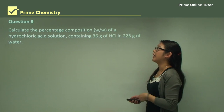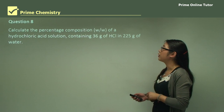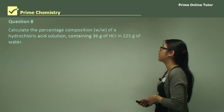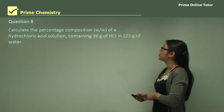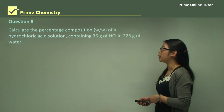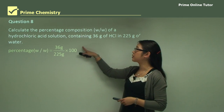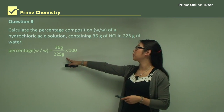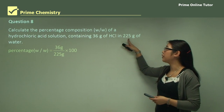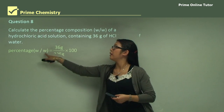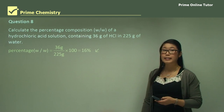Question eight: calculate the percentage composition weight-to-weight of a hydrochloric acid solution containing 36 grams of hydrogen chloride in 225 grams of water. Percentage W/W = 36 grams divided by 225 grams, then multiplied by 100, giving us 16%.